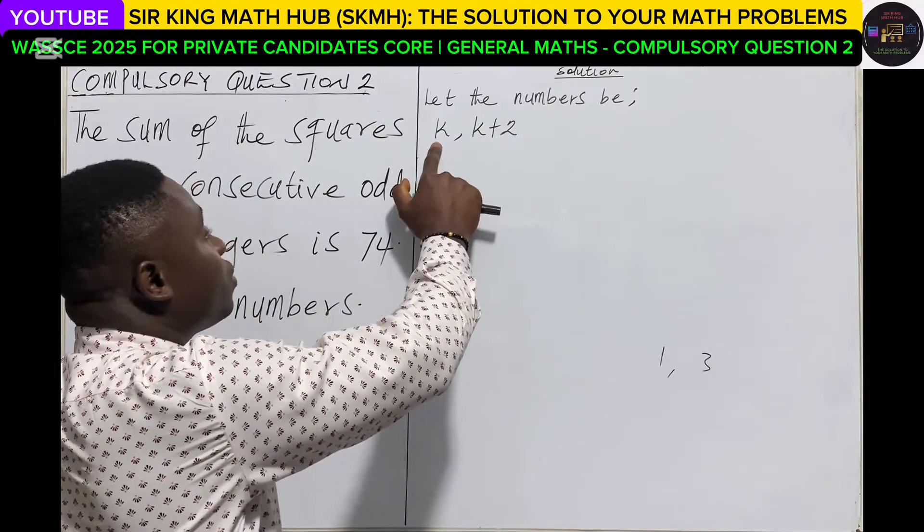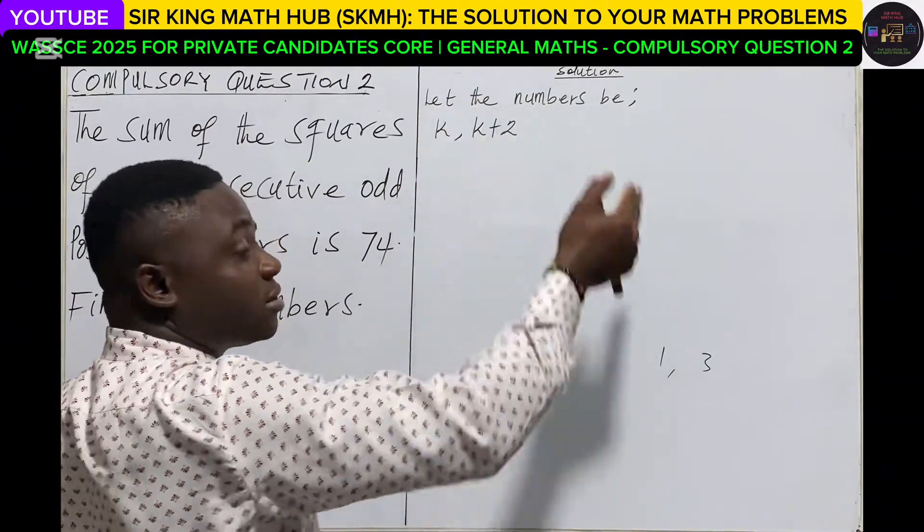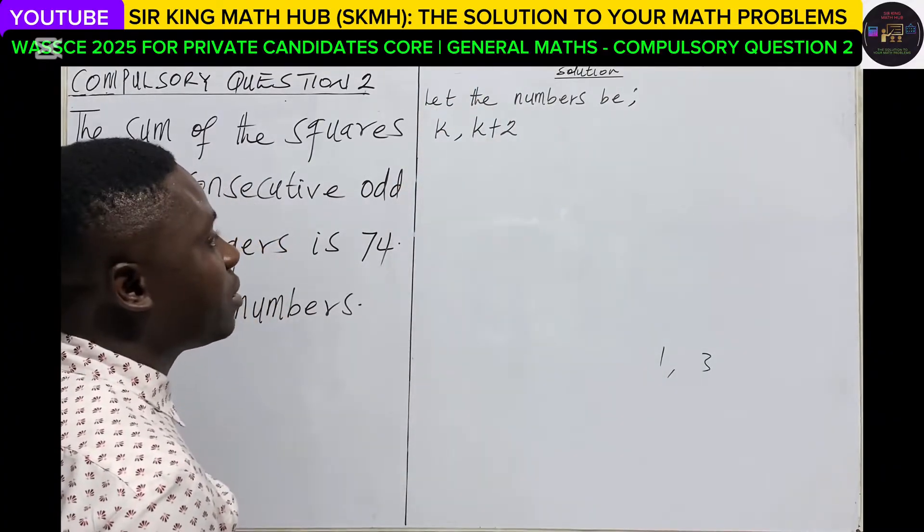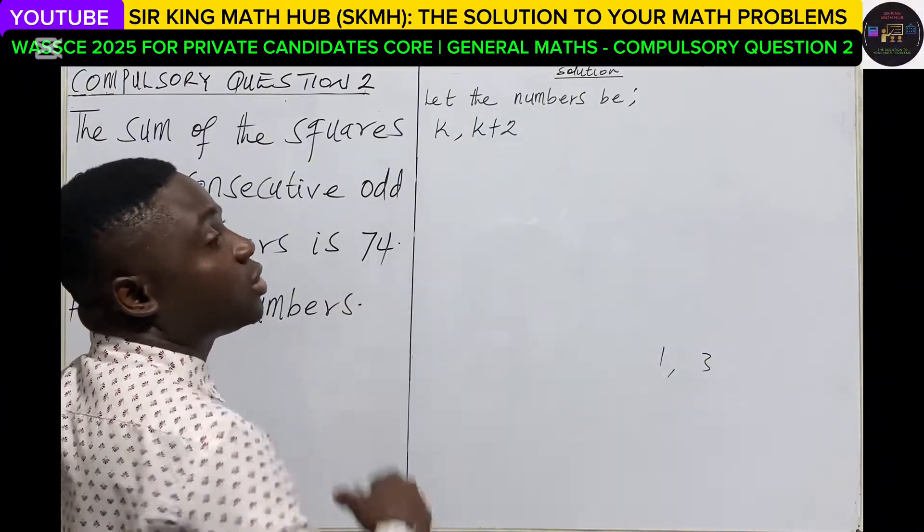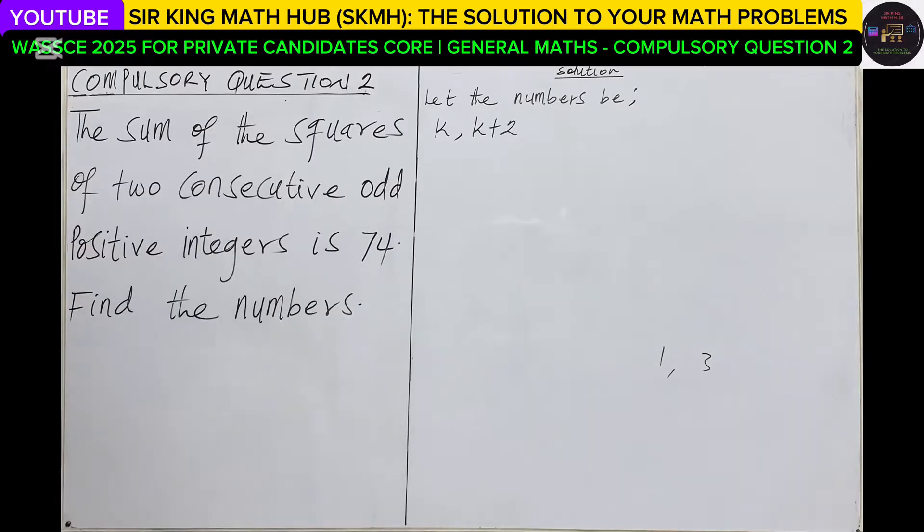So again, if the first one is represented as k algebraically, the second consecutive odd number should be k plus 2. That is the reason why we added 2 to the k to get to the second thing.